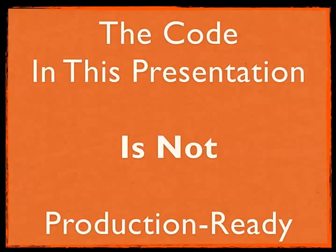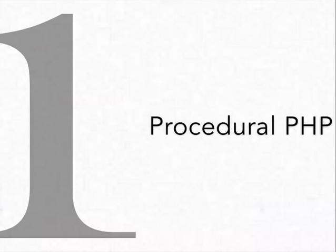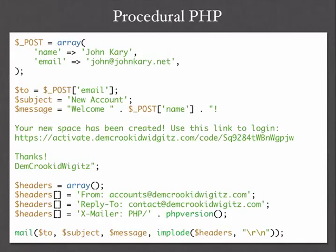Before we begin, a quick word of caution: the code in this presentation is not production-ready. I've condensed it a lot to fit on the slides and make it easily digestible. I'm using abbreviated variable names, no namespaces, no data validation, no escaping or error checking. The first slide of procedural PHP has whatever you could inject into POST name getting piped into the email — it's vulnerable to header injection — so fully disregard that. I'm just doing this for the sake of demo.